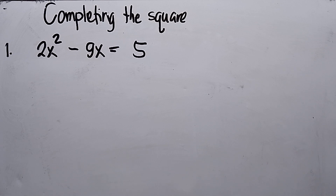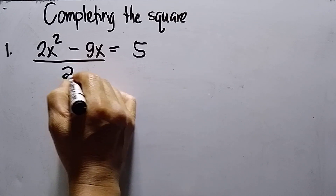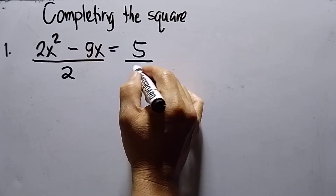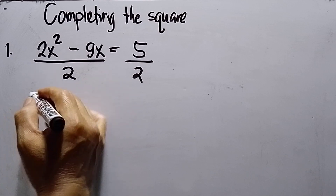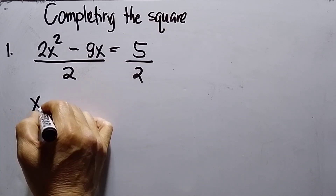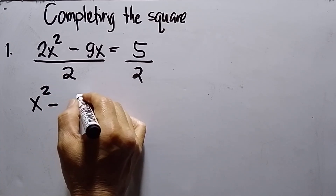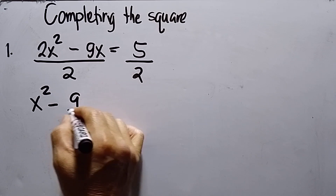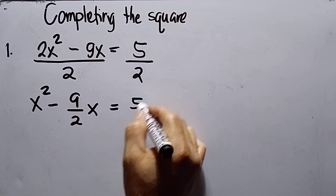So I have here number 1: 2x squared minus 9x is equals to 5. The first thing to do is I need to divide both sides by 2, which is the coefficient of x squared. So this will be x squared, because 2 divided by 2 gives x squared, and then I have 9 over 2x is equals to 5 over 2.